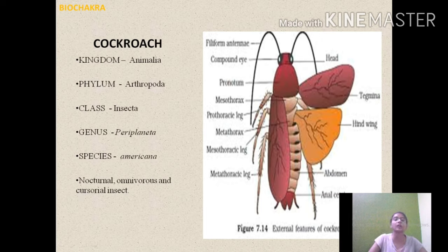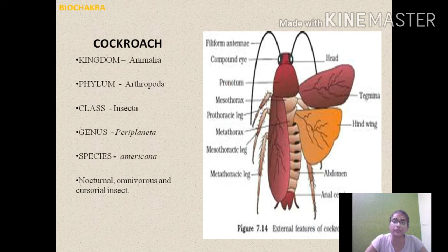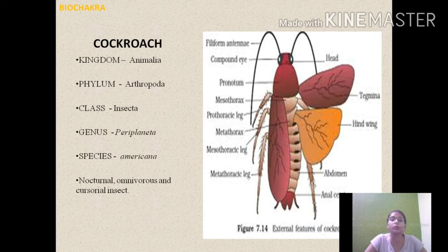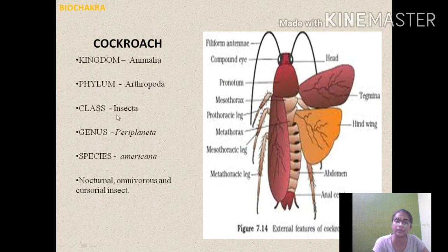Cockroaches are mostly found where there is warmth, dampness, and availability of organic food material. They feed on all kinds of food materials — for example, fruit, bread, paper, cloth, and even the dead bodies of their fellow mates. So cockroaches are nocturnal, omnivorous, cursorial, found in damp and warm places, and feed on various food materials.